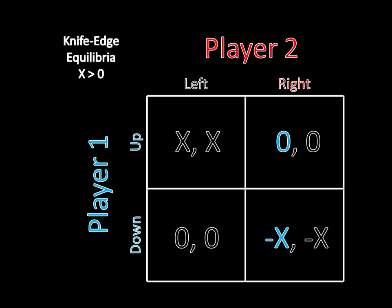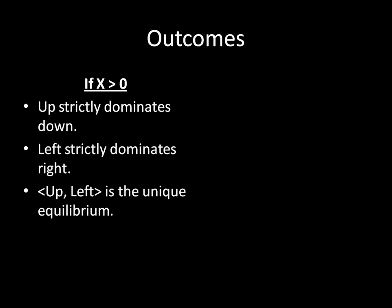And so that means up strictly dominates down for player 1. We could do something very similar to show that player 2 has a strictly dominant strategy as well. She should always play left regardless of what player 1 does, and so that means right is strictly dominated. And that gives us a unique solution here. So when x is greater than zero, up strictly dominates down, left strictly dominates right, and so up left is the unique equilibrium.